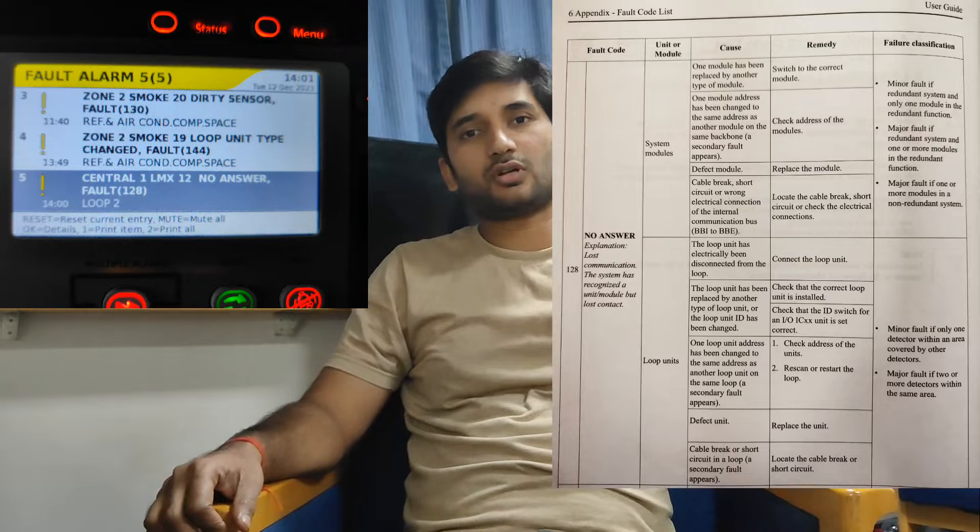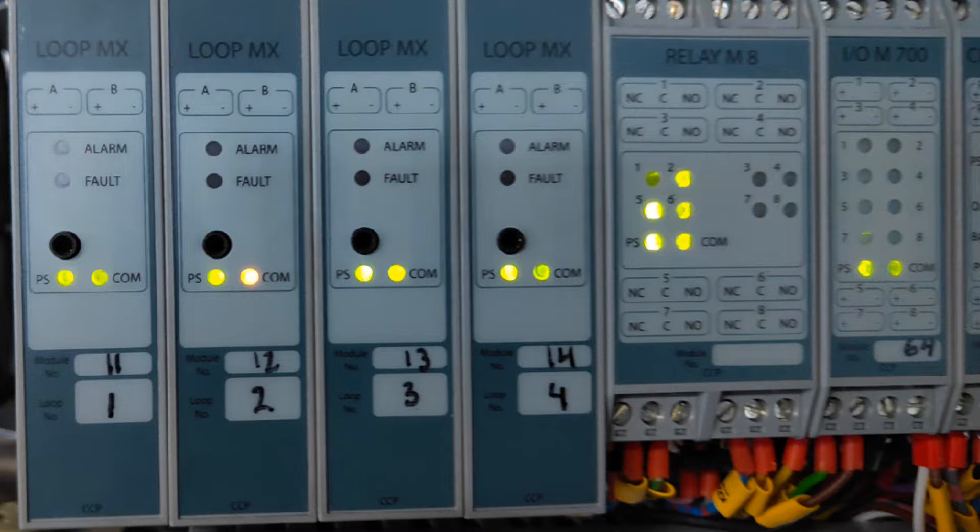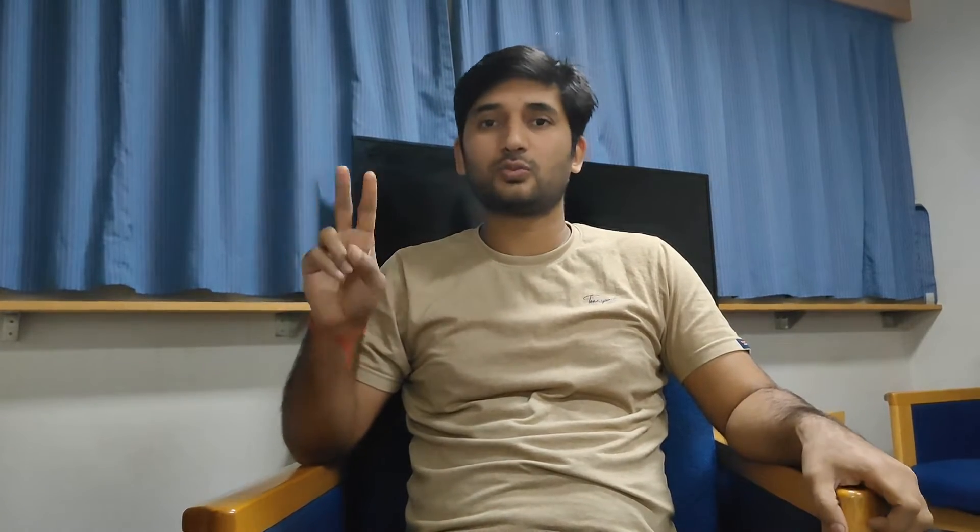If we talk about the no answer problem, you can receive a no answer from any module which is installed on the bridge, or it can come from your loop system or from a particular sensor. If you are talking about any module, the module may be one that you have changed but it is not of the same type, so you can receive this alarm. If you have changed the module and you have not changed the address properly — like the address is matching with any other module address — if two modules are there with the same address, or any sensor or any module with the same address, they are going to give you no answer or fault.